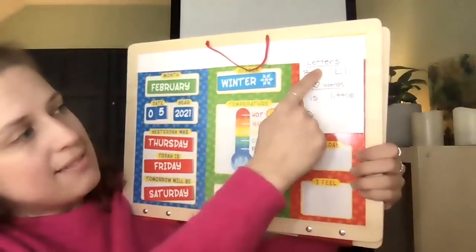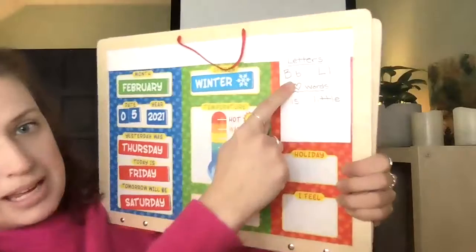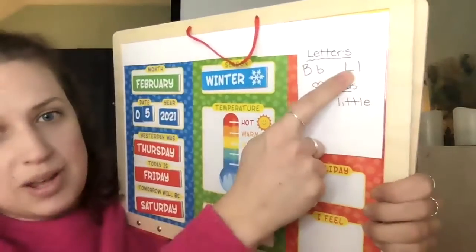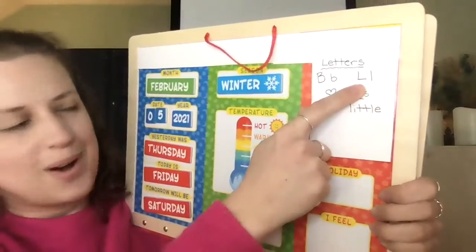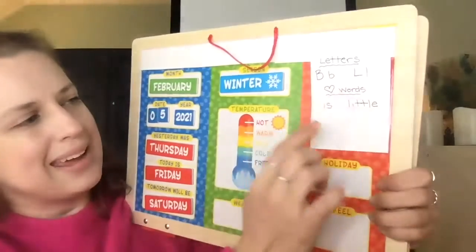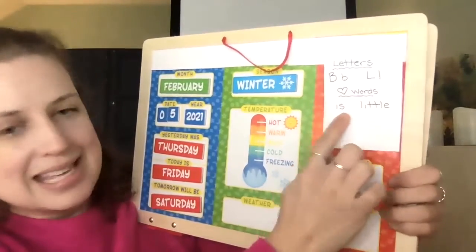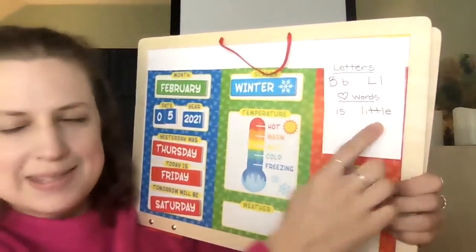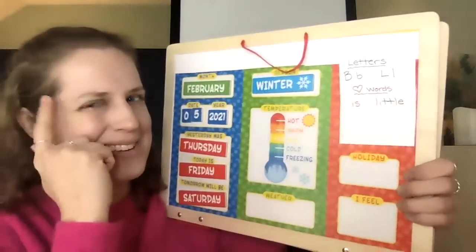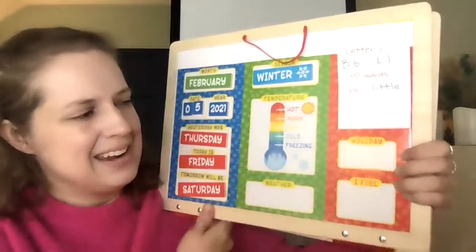We have the letters B and L, and we have practiced those all week, along with our heart words: 'is' and 'little.' So we should have those in our head.